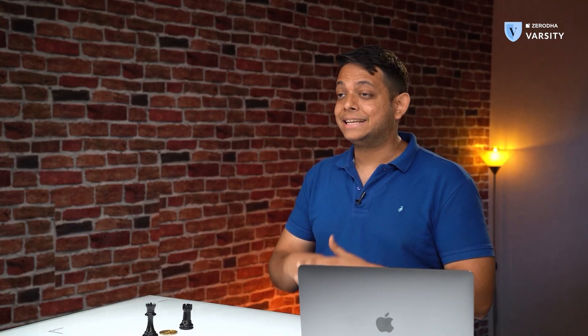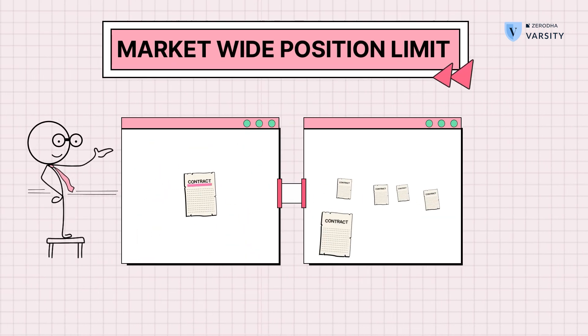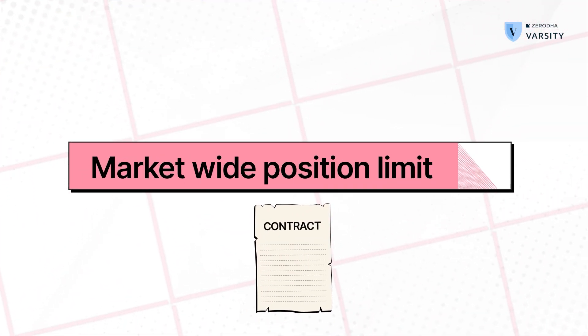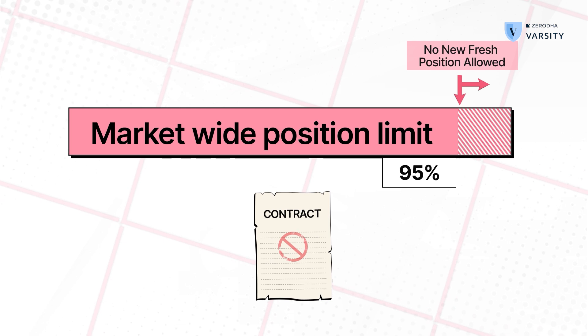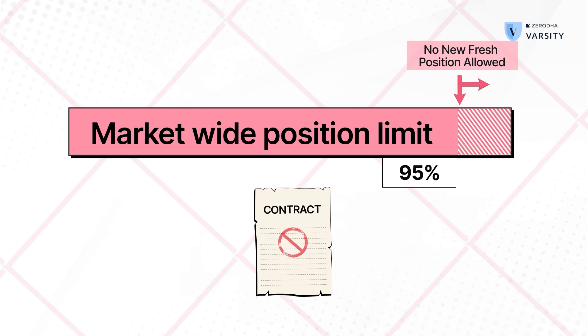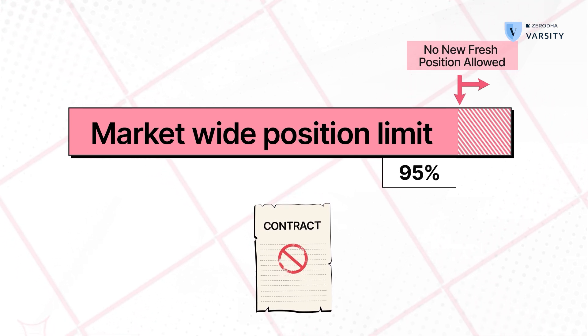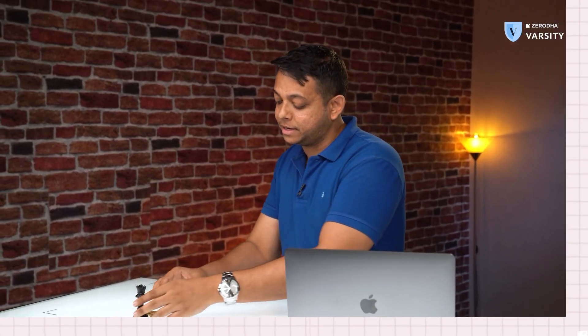The number of contracts that can exist in the system can't be unlimited. There is a limit to how many contracts can exist in any security, and once it hits 95% of that limit — called 95% of the market-wide position limit — the exchange doesn't allow you to create any new positions. This means no fresh short or long positions can be opened. This is called the contract ban period, where no new fresh positions can be created, but existing players can exit positions, and after some time once the ban period has been removed, new positions are allowed again.